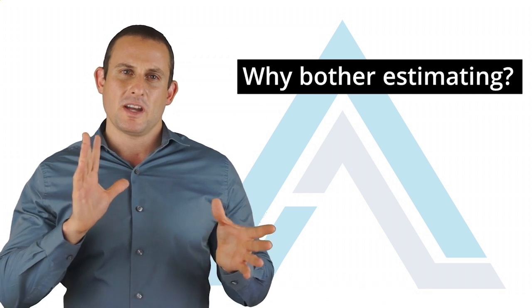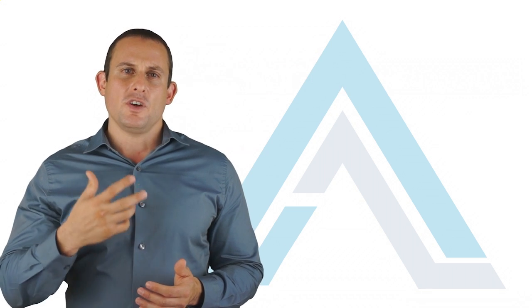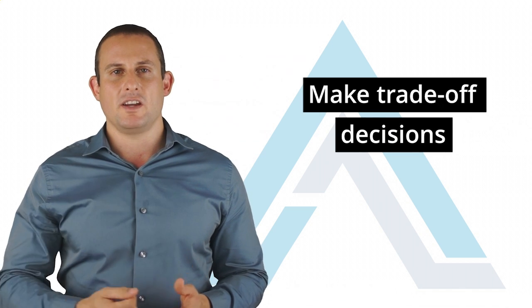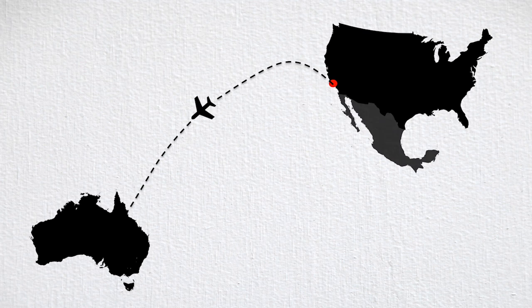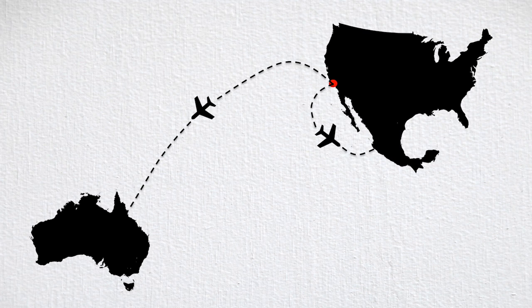I'm going to talk about two of them here. The first reason is to help us make trade-off decisions. For example, let's say that I were to ask a couple living in San Francisco whether they would prefer a vacation to Australia or a vacation to Mexico. Which one would they choose? Sure, they might have a preference for one or the other, but two other big factors come into play – time and budget.